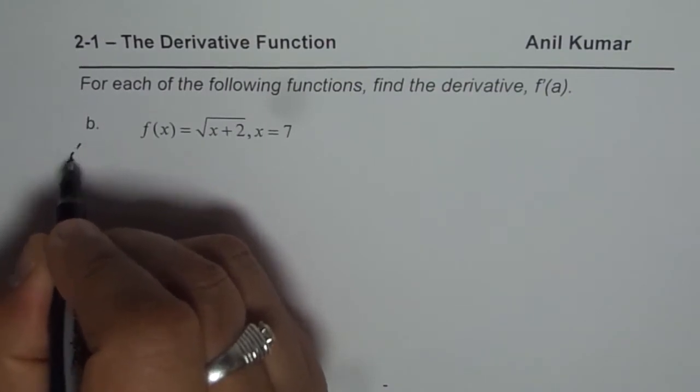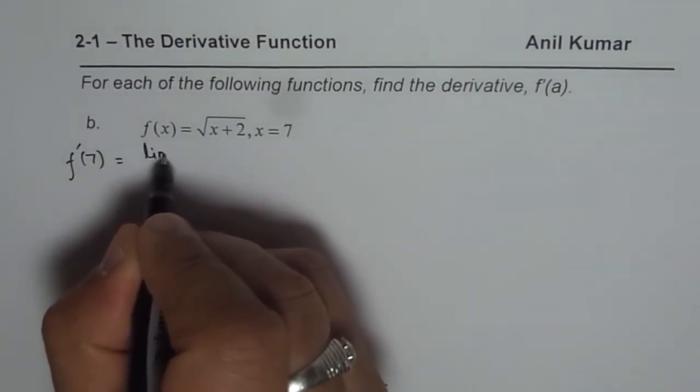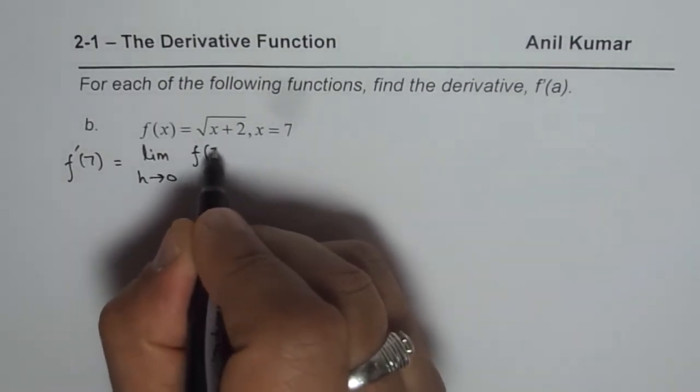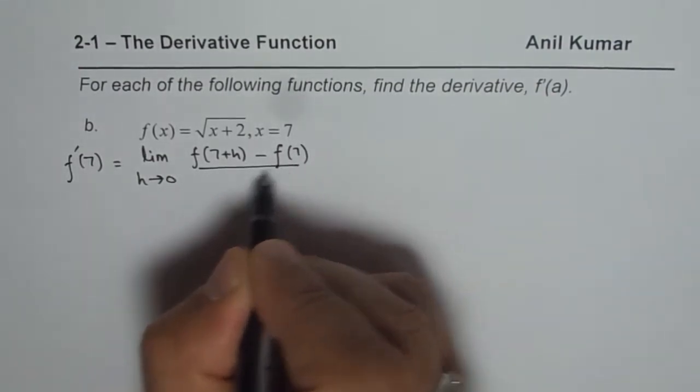So the derivative at x equals 7 will be equals to the limit of this function as h approaches 0. So f of 7 plus h minus f of 7 over h.